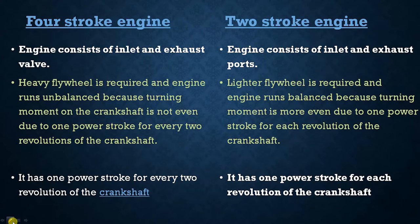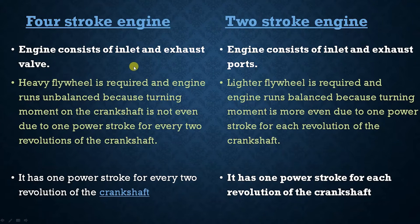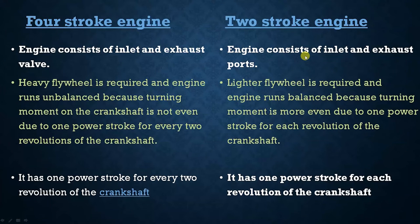In the first column there is the four stroke engine, and in the second column it is the two stroke engine. In a four stroke engine, the engine consists of inlet and exhaust valves — remember the term valve. Whereas in a two stroke engine, the engine consists of inlet and exhaust ports. The difference is valve versus port. The valve mechanism is quite complicated whereas the port is a very simple structure.